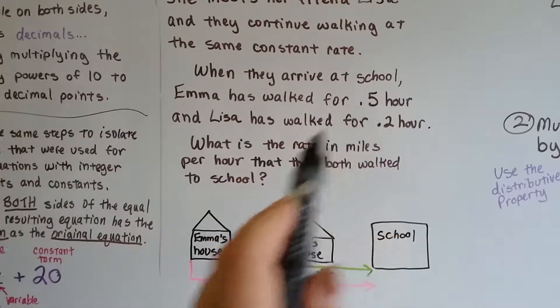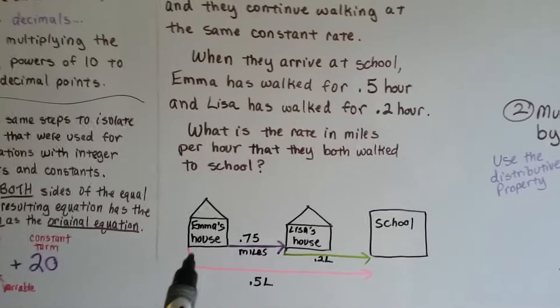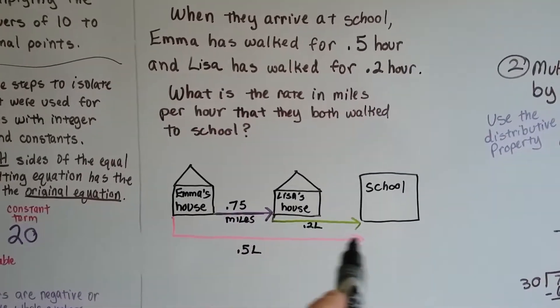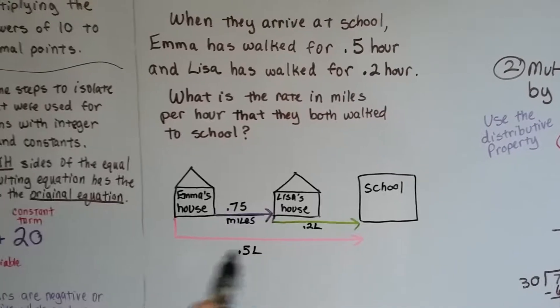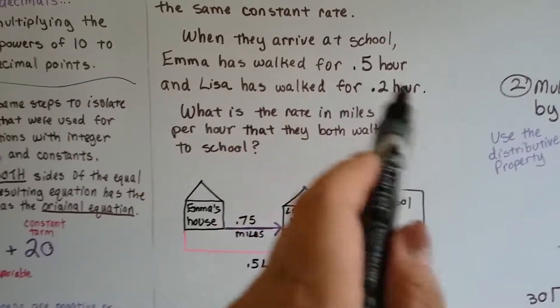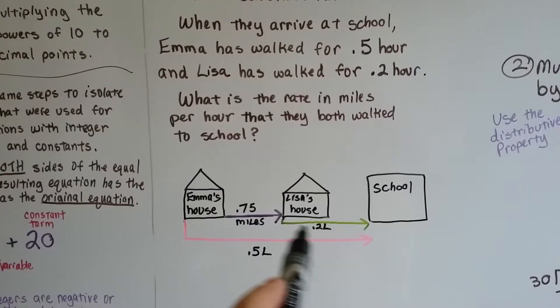When they got to the school, when they arrived at the school, Emma had walked .5 hours. That's half an hour. And Lisa had walked for 2 tenths of an hour.